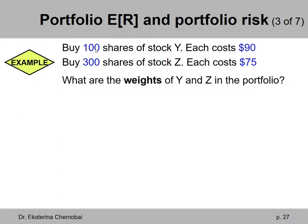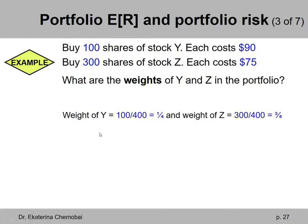So 100 shares of stock Y, 300 shares of stock Z. What are the weights? In which proportions are you buying shares of stock from Y and Z? If you take 100 shares of stock Y divided by a total of 400 shares that you're buying from both companies, you get one quarter. And so the weight of stock Y is one quarter, and the weight of stock Z is the remaining three quarters.